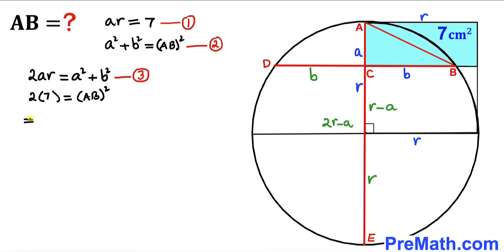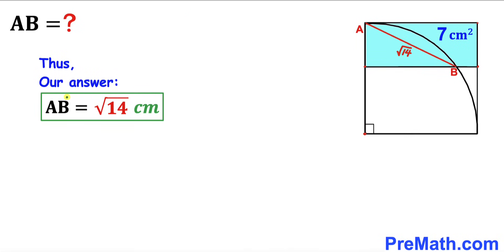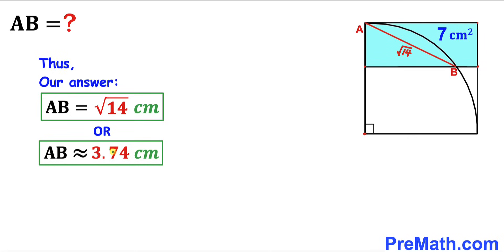So Equation 3 becomes AB² = 2 × 7 = 14. Taking the square root of both sides, the square and square root cancel, giving AB = √14. Therefore the length AB is √14 centimeters, which is approximately equal to 3.74 centimeters. That's our final answer.